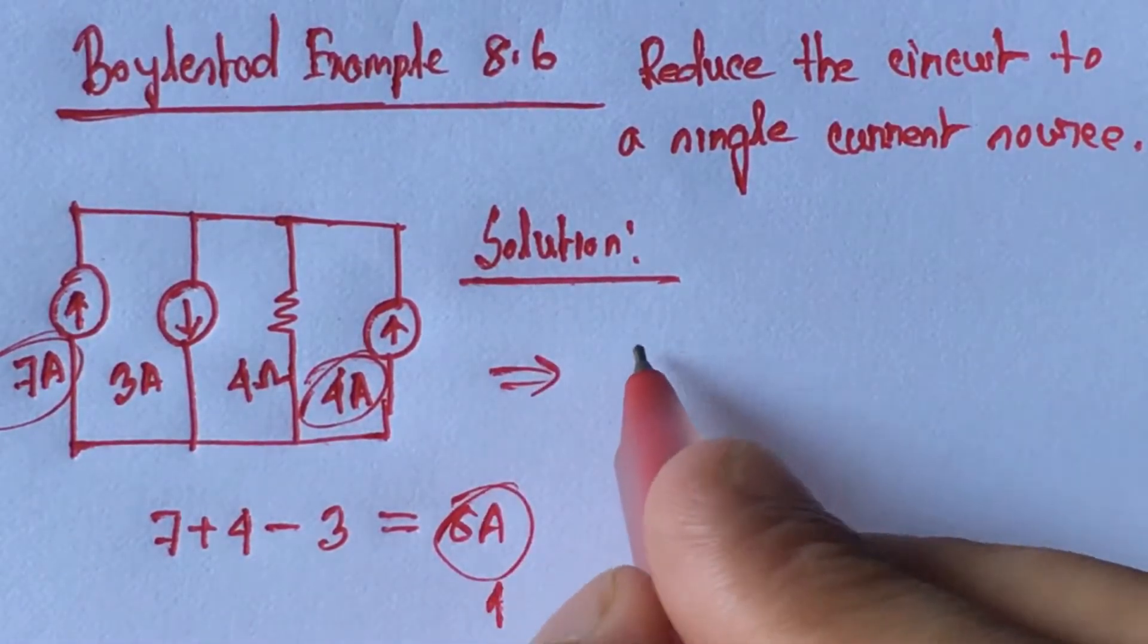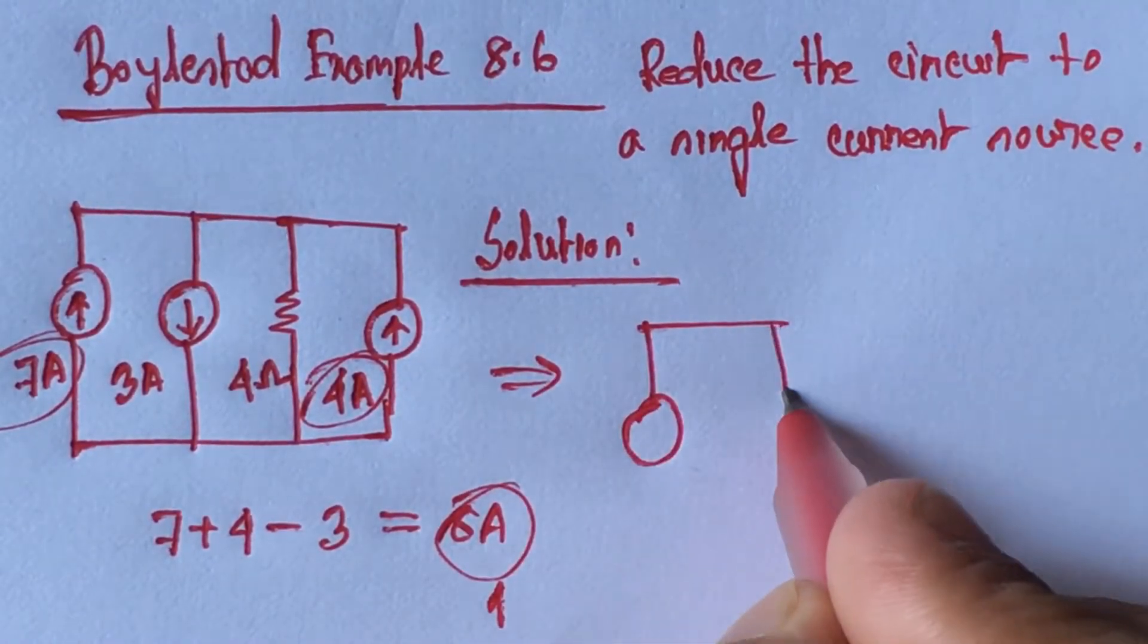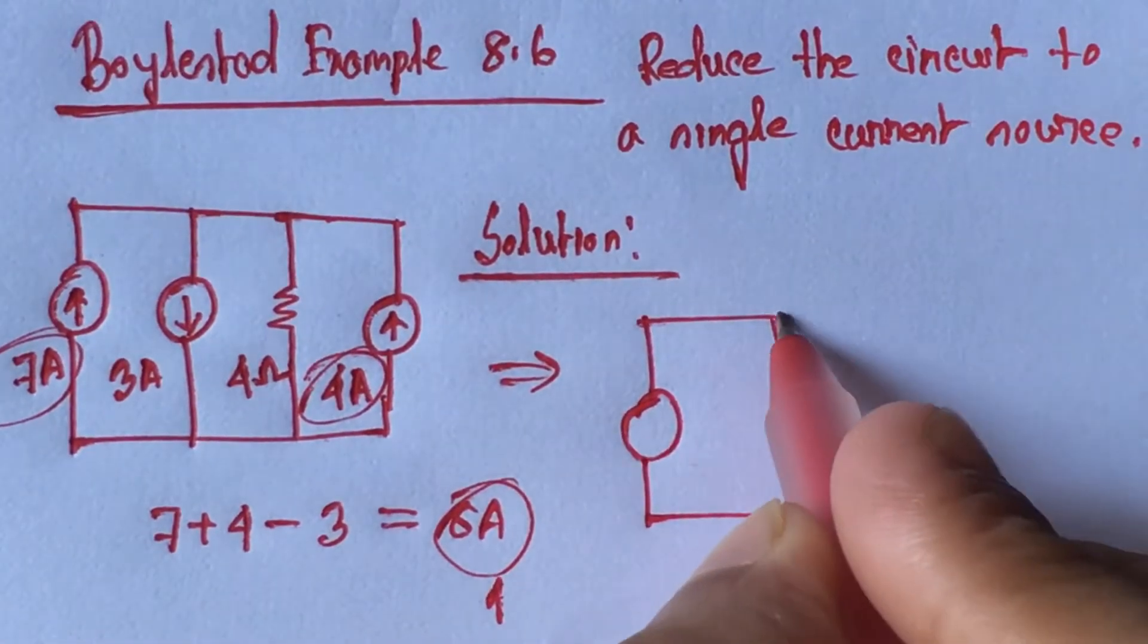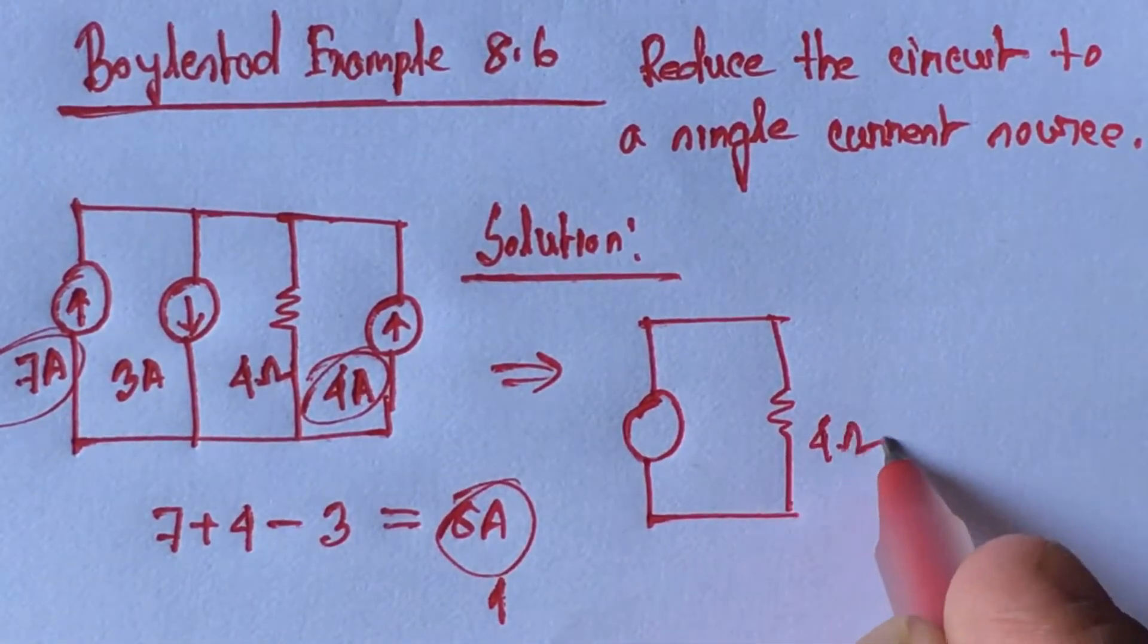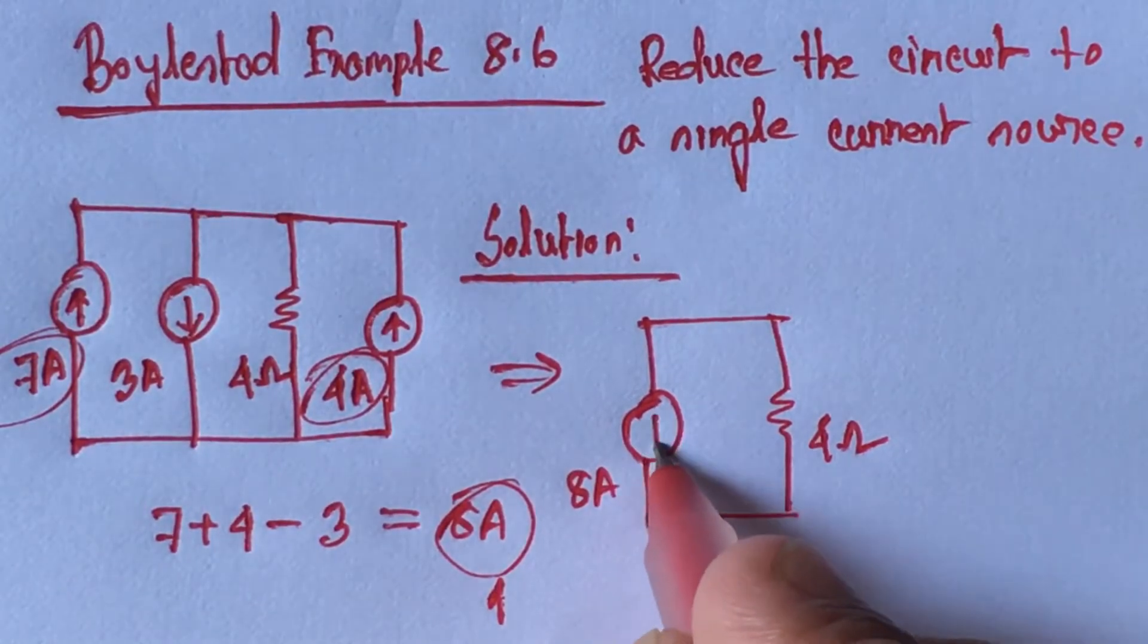If we redraw the circuit it will become as the current source and the equivalent resistance and the equivalent resistance is 4 ohm. Current source value is 8 ampere and this is upward.